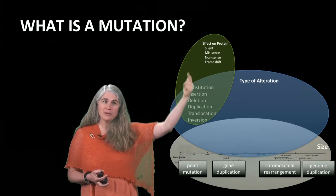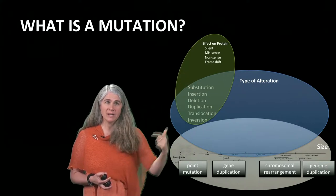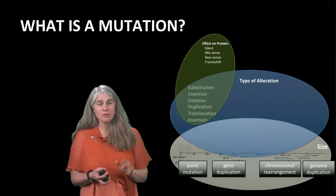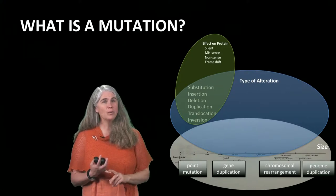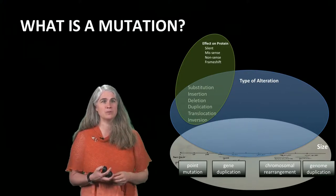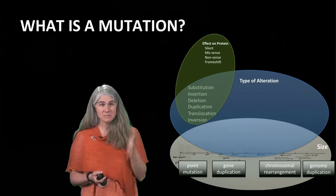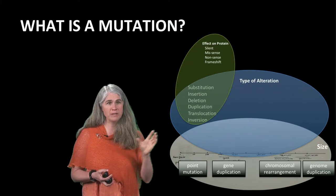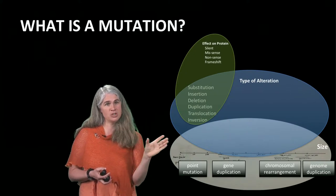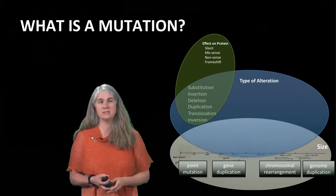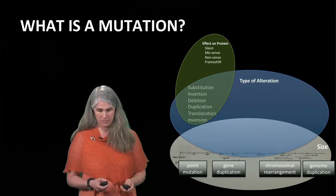These all have different effects on the protein. Most are silent — they have no effect whatsoever. A few are missense, meaning that they change the protein that's produced. And some are nonsense, meaning they stop the protein in its tracks. Some of the missense mutations are frame shifts, meaning they shift the reading frame of how the DNA bases are read and translated into proteins.